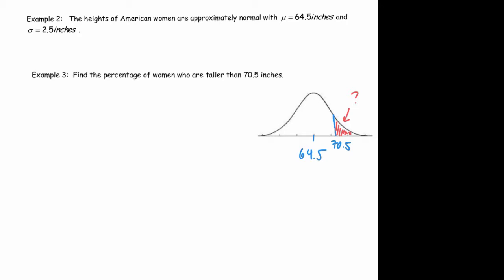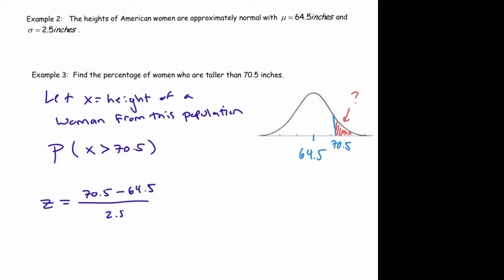So I'm going to just carry over the variables I defined before. So again, we let x equal the height of women from this population. We're interested in the percentage of women whose height is greater than 70.5. So we find the z-score. So we take 70.5 minus our mean and divide by our standard deviation to get our z-score. And when you do this, you get 2.4.